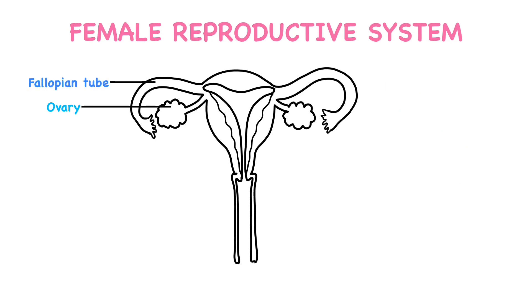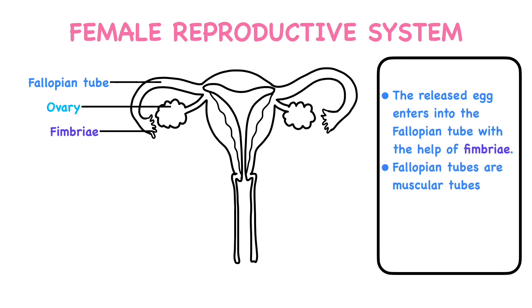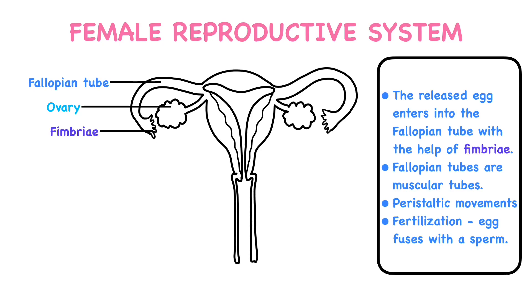After the formation of the egg, it is released by the ovaries. The released egg enters into the fallopian tubes with the help of finger-like processes called fimbriae, situated at the end of the fallopian tube. Then the egg travels through the fallopian tube to the uterus. Fallopian tubes are muscular tubes, so peristaltic movements of the fallopian tubes support the movement of the egg.